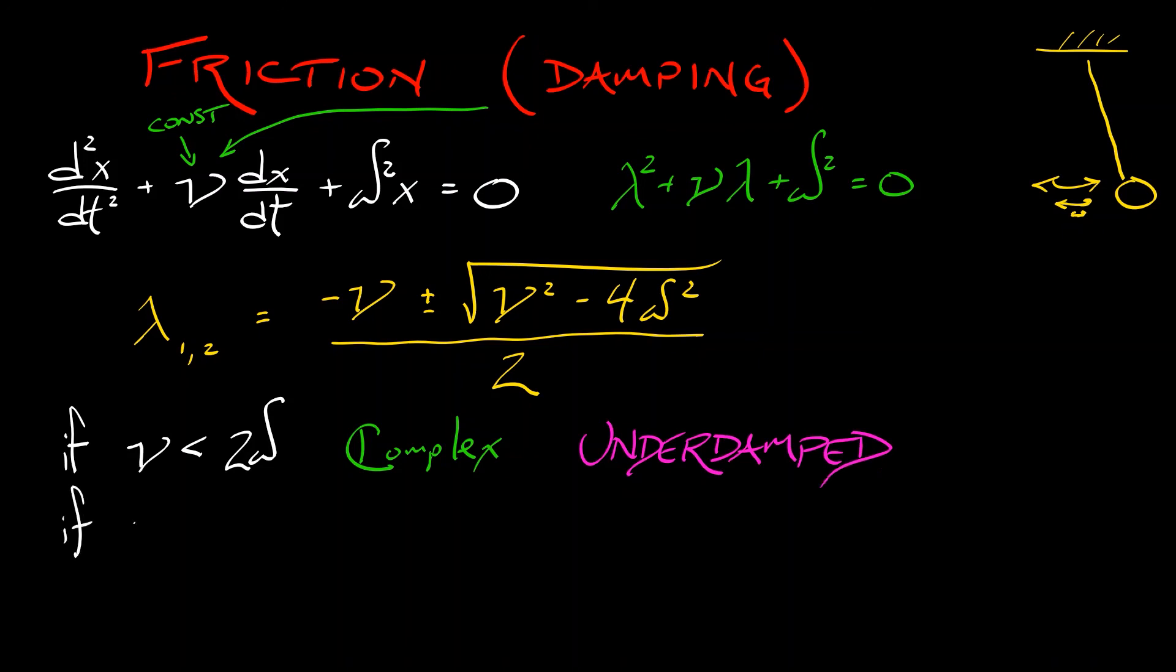If on the other hand, your damping coefficient is sufficiently large, if it's bigger than 2 times omega, then your eigenvalues are real. That discriminant is going to be positive. And you're going to have a pair of eigenvalues that are both going to be negative.